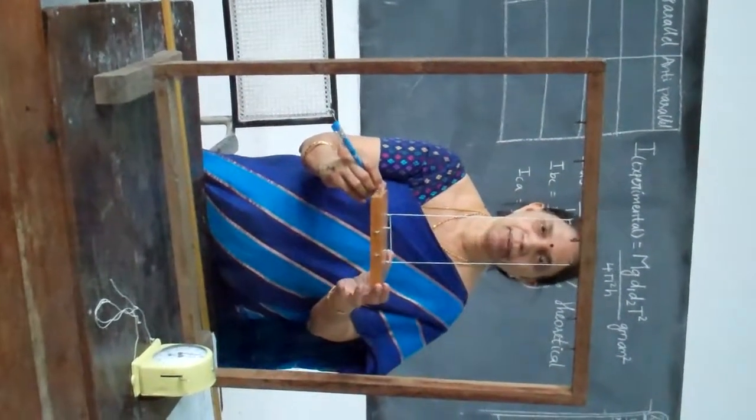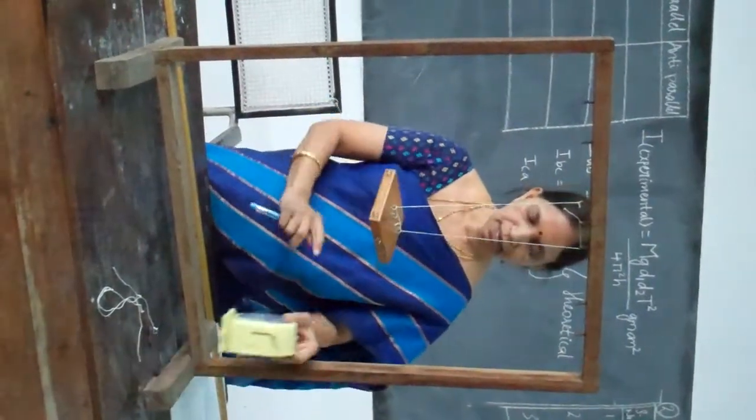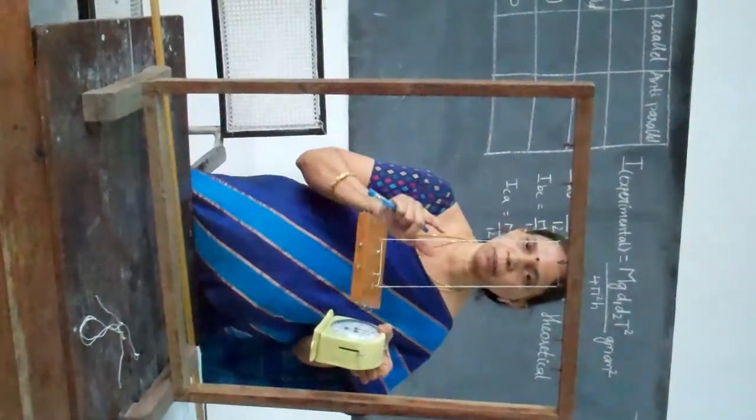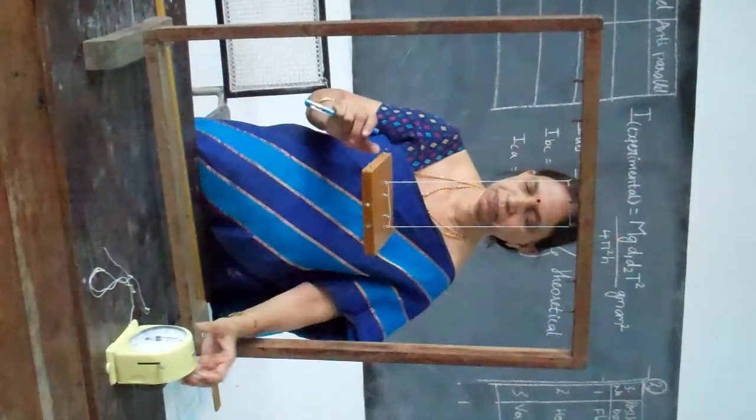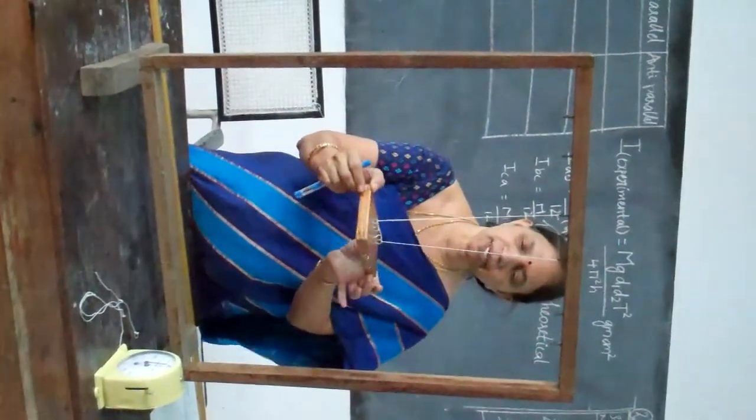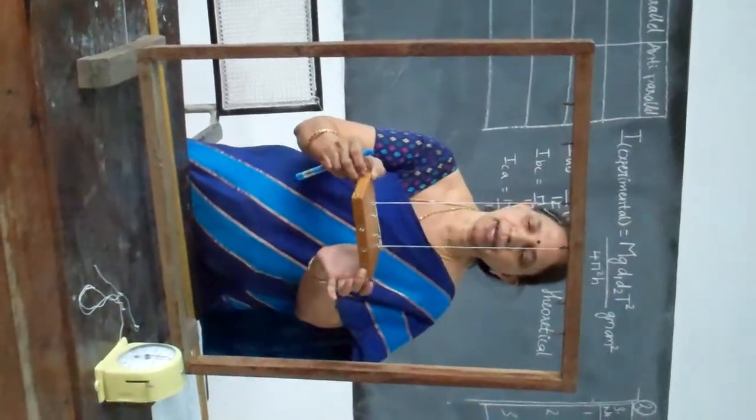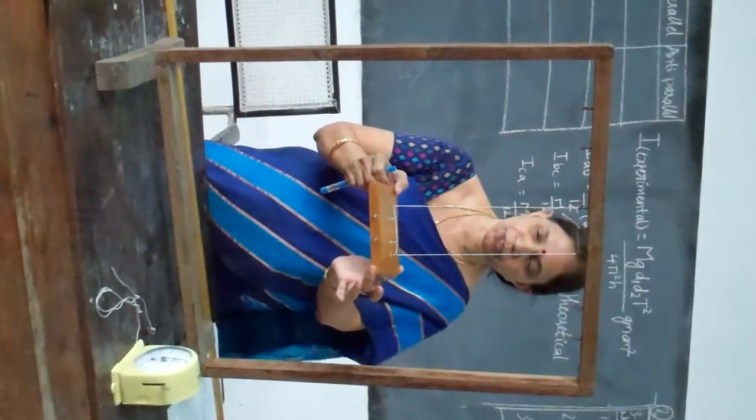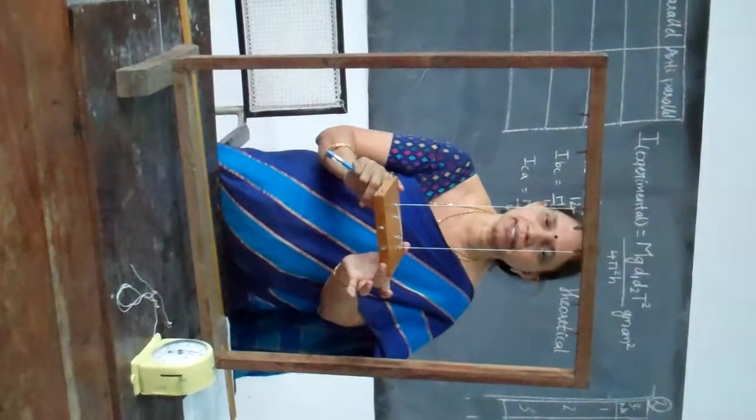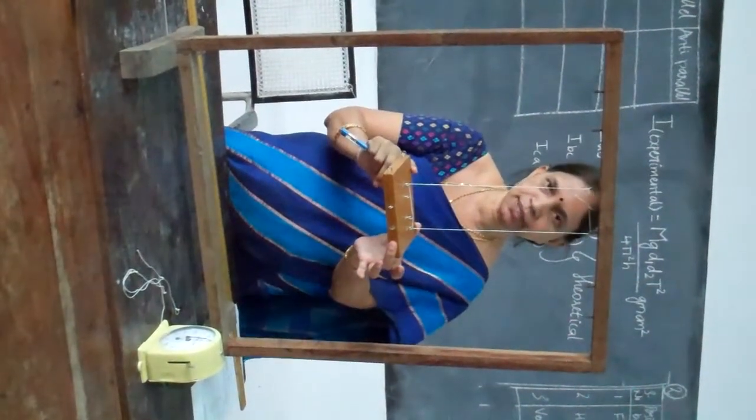You see that it is stable. You leave it to oscillate, start the stopwatch, and find the time taken to complete 20 oscillations. After 20 oscillations, repeat this experiment for another trial. For every experiment, you will have to take a minimum of two trials. Find the time T1 and the time T2, find the average time and measure the time period. The time period will be measured by dividing the total time by 20 oscillations.